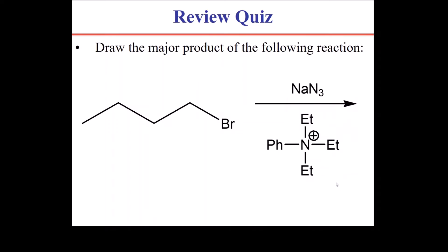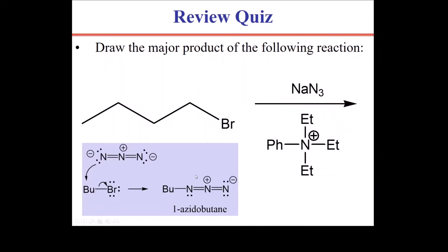This reaction proceeds via a simple SN2 mechanism. This is the azide ion. Sodium is a spectator ion and floats away. The azide has two nucleophilic ends. Either one of them will attack the alpha carbon, bump off the bromide as a leaving group, and we end up with one azidobutane.